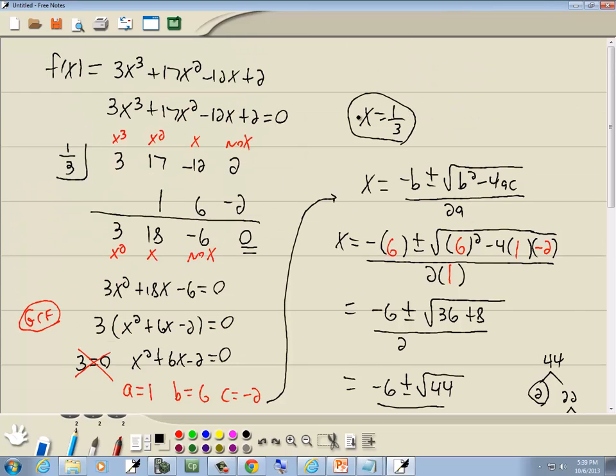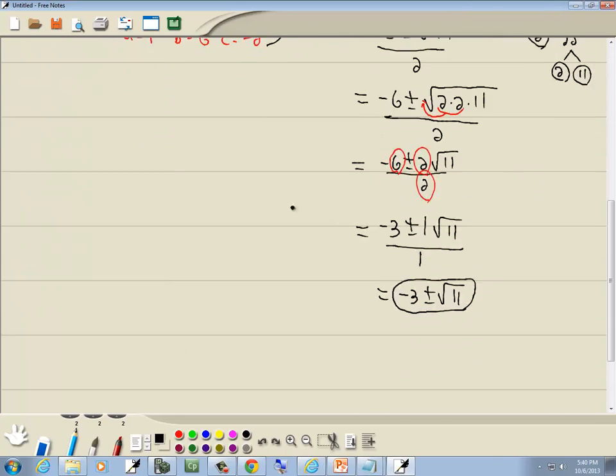Now up above, x equals 1 third, we got that answer via the calculator. So that's our first answer. Our largest power is x to the third which means we're going to have 3 answers. And down here we found this plus or minus is our other 2 answers. So that counts for all 3 of our answers.